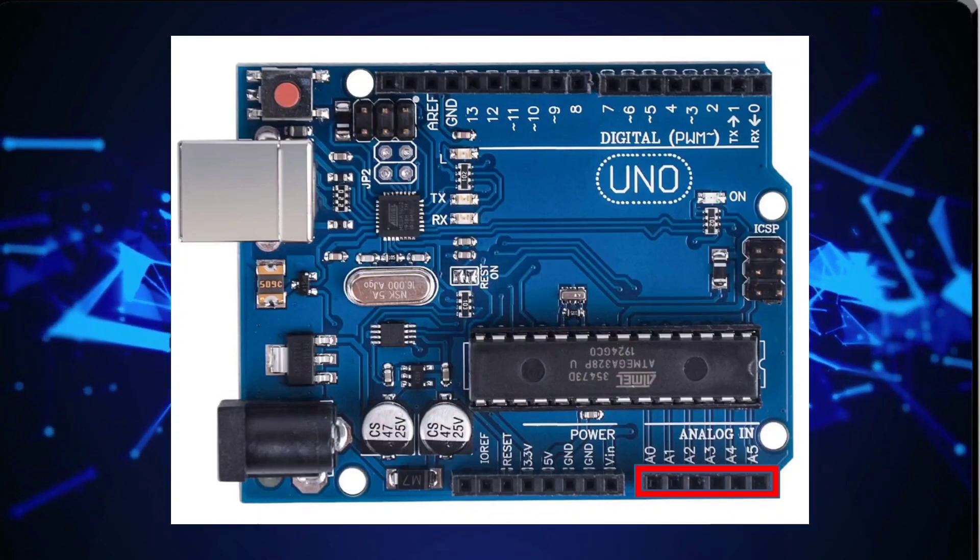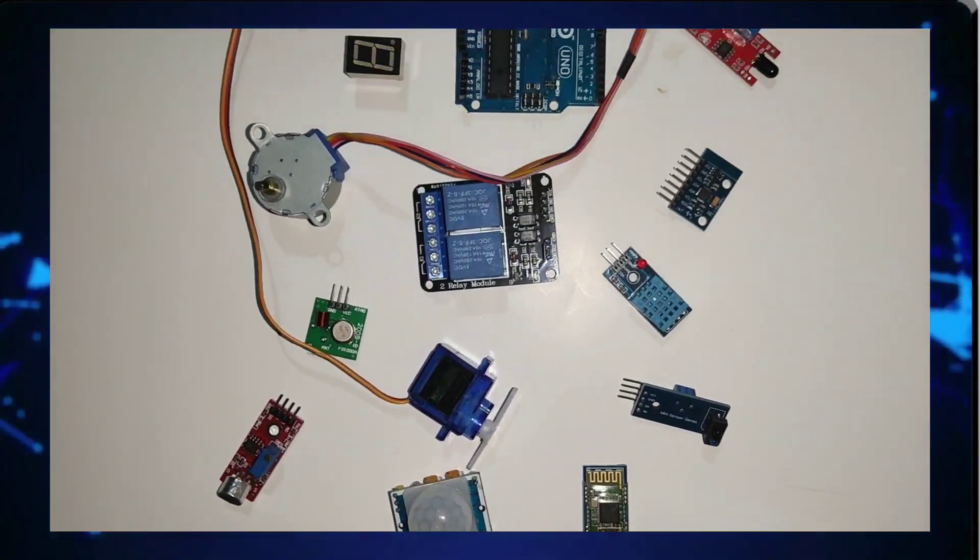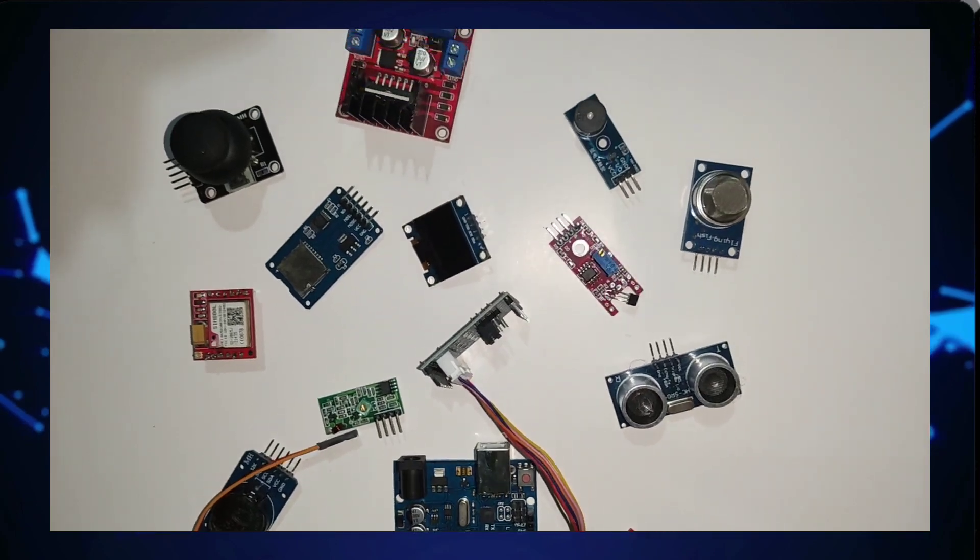Arduino Uno features 6 analog input pins, marked as A0 to A5. These pins can read continuous voltage levels from sensors and other analog devices.